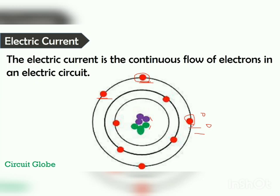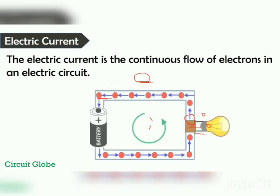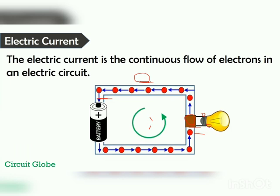Now consider that we have one electrical circuit. The electrical circuit means the circuit which provides the continuous path to the flow of current. This circuit is made of metal.